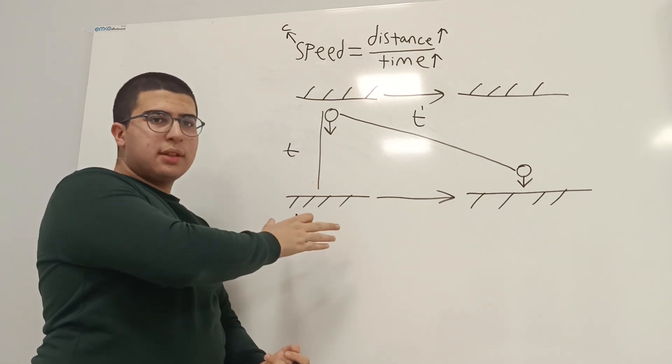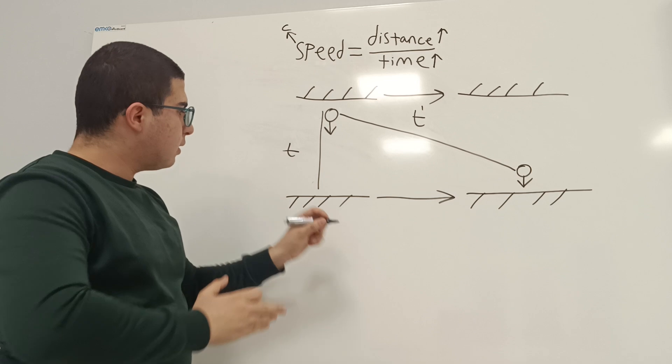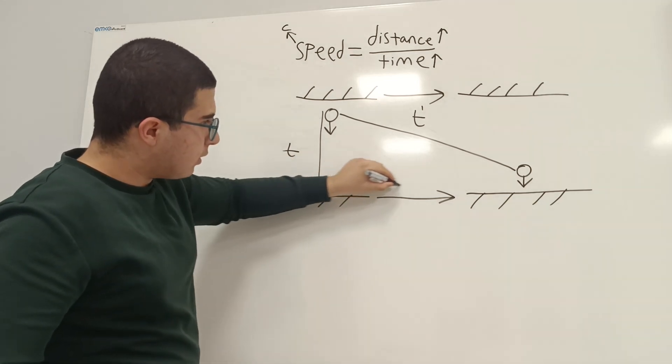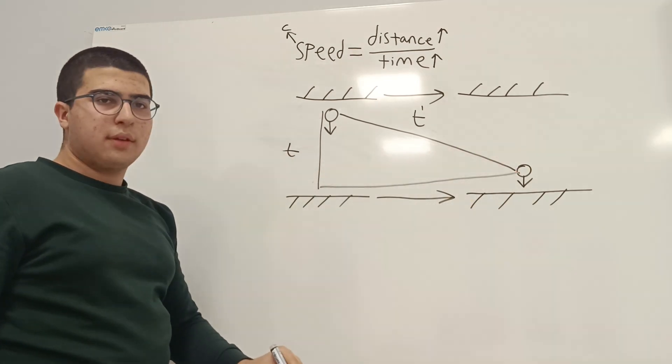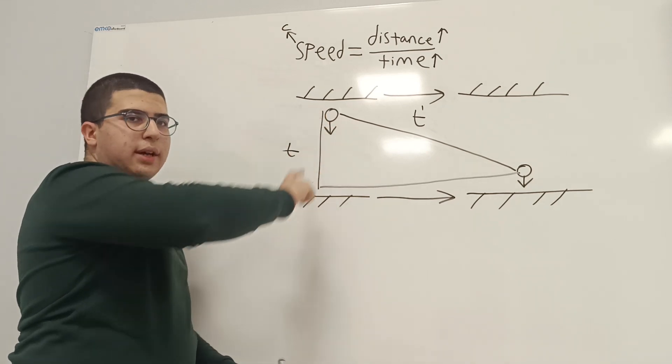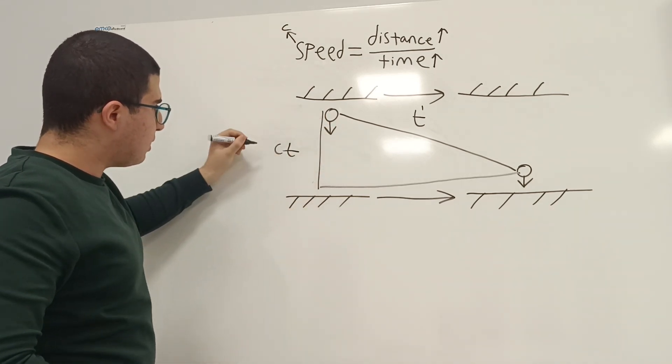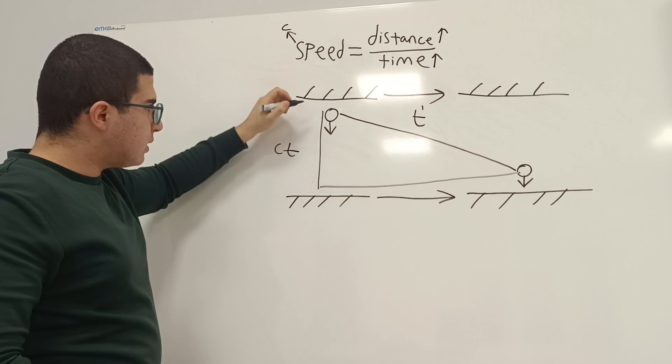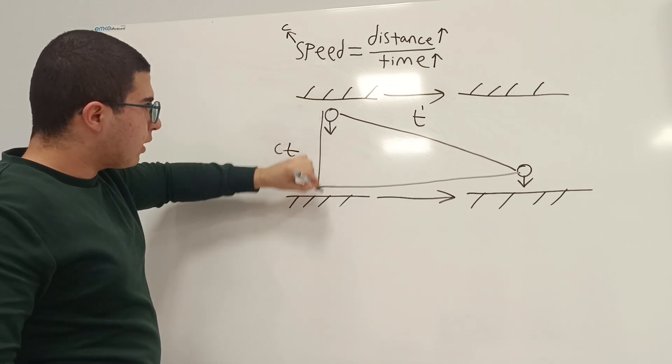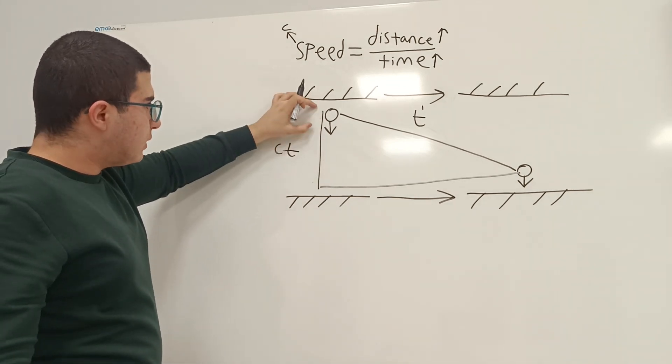To understand the equation, we can form a triangle here. The triangle's long side is c times t, because it's the distance that this photon covers between this clock. So, it's just c times t.